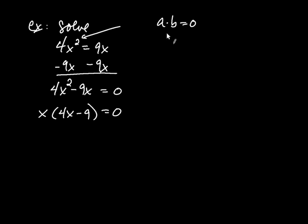And then once you have A times B equals zero, what you then do is you set A to zero. That's the first thing. And then you set B to zero. Well, that means I set A, which is X, to zero. And then I set B, which is 4X minus 9, equal to zero.